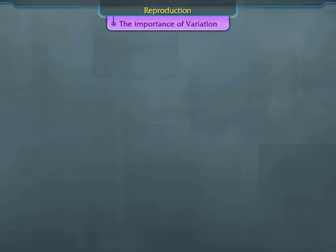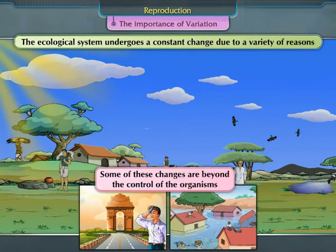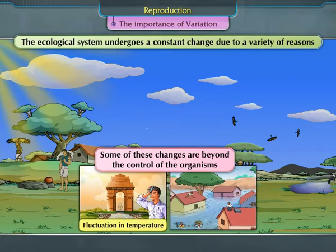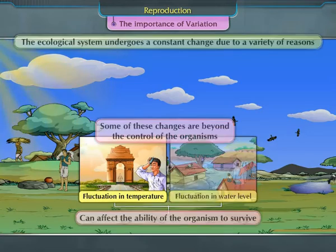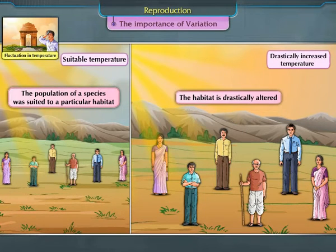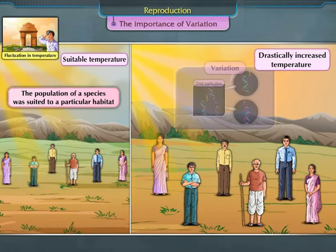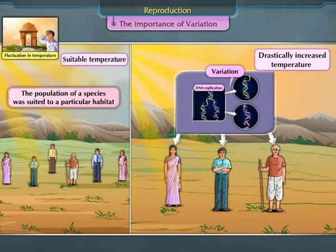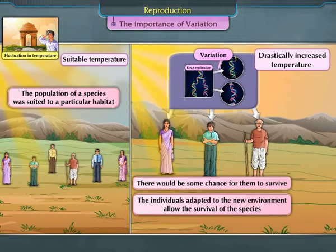The ecological system undergoes a constant change due to a variety of reasons. Some of these changes are beyond the control of the organisms — for example, fluctuations in temperature, water levels, etc. — and can affect the ability of the organism to survive. If the population of a species was suited to a particular habitat and the habitat is drastically altered, then there is a possibility that the population could get wiped out. Under such conditions, if some variations were present in a few individuals of the species, there would be some chance for them to survive. The individuals adapted to the new environment allow the survival of the species and thus prevent their extinction.